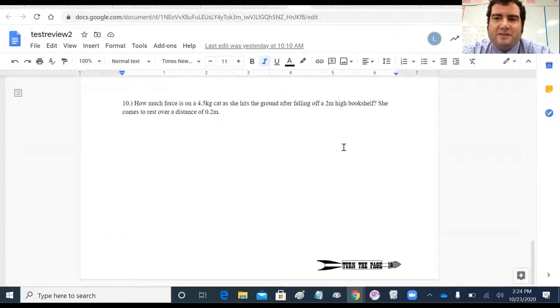Hi, this is to go through problem number 10 on the unit 2 test review in the 2020 school year. I made this problem too hard. I was kind of in a bad mood when I wrote it. And what I really should have done is I should have given you an initial velocity for the cat as it was hitting the ground.